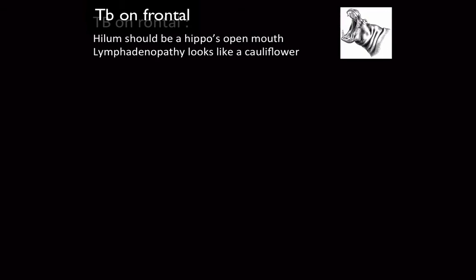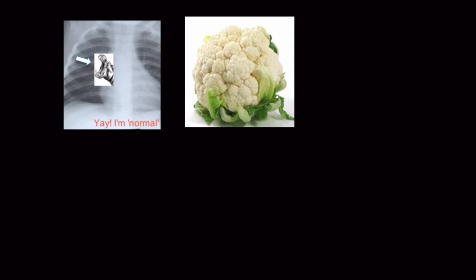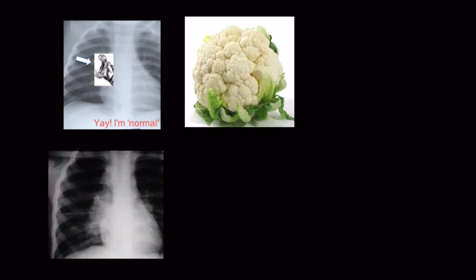Let's look at TB on the frontal chest radiograph. The hilum should look like the open mouth of a hippopotamus. If there's lymphadenopathy, we say it looks like a cauliflower or a mass. Here's the normal again — the arrow shows a normal hilum with diverging vessels, the open mouth of a hippopotamus. And here's what lymph nodes look like: a big lumpy mass replacing the open mouth of the hippopotamus, exactly where the arrow points.